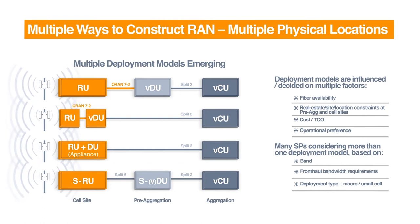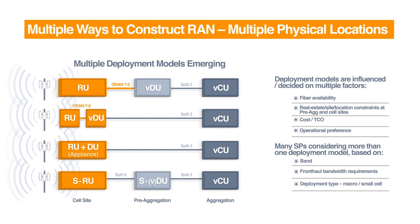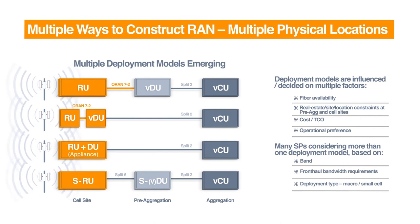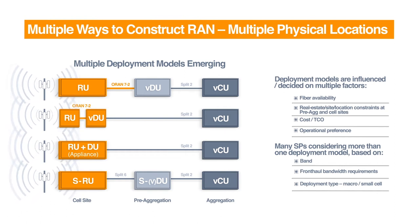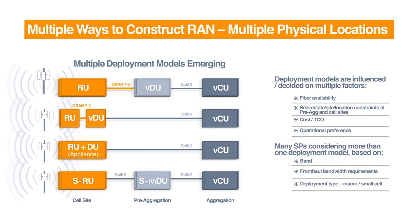Different protocol layers will reside in different components based on fronthaul availability and deployment scenarios. This approach will reduce the cost and TCO for mobile operators. The lightweight and low-power RU enabled by split 7.2 is more suitable for better coverage in large dense environments by enabling shared cell architecture. However, higher split options like split 2 or 5 are better suited for areas where fronthaul routing options are limited.